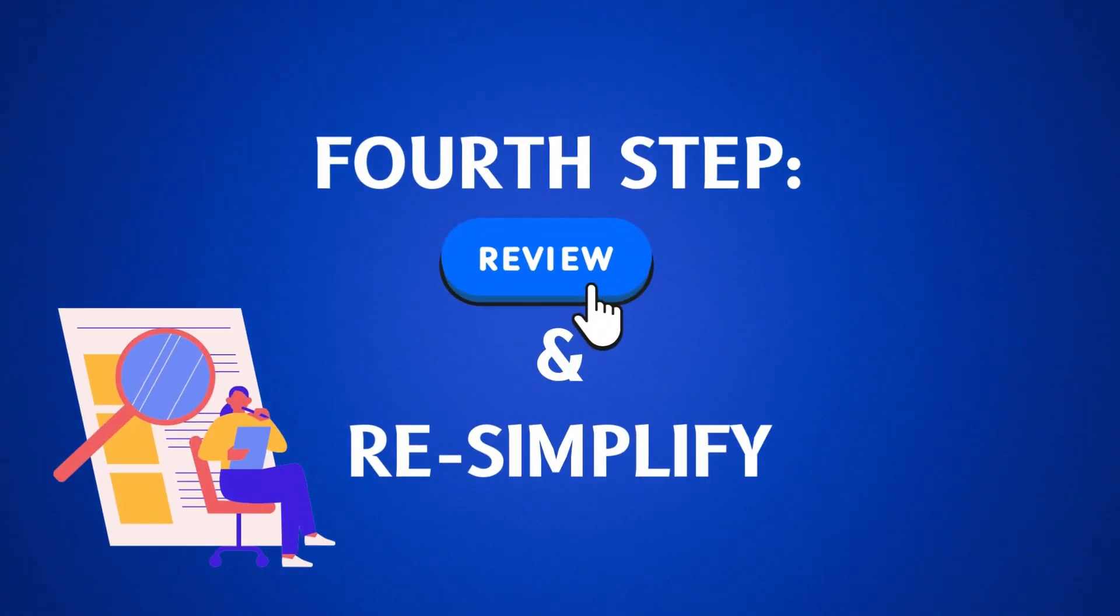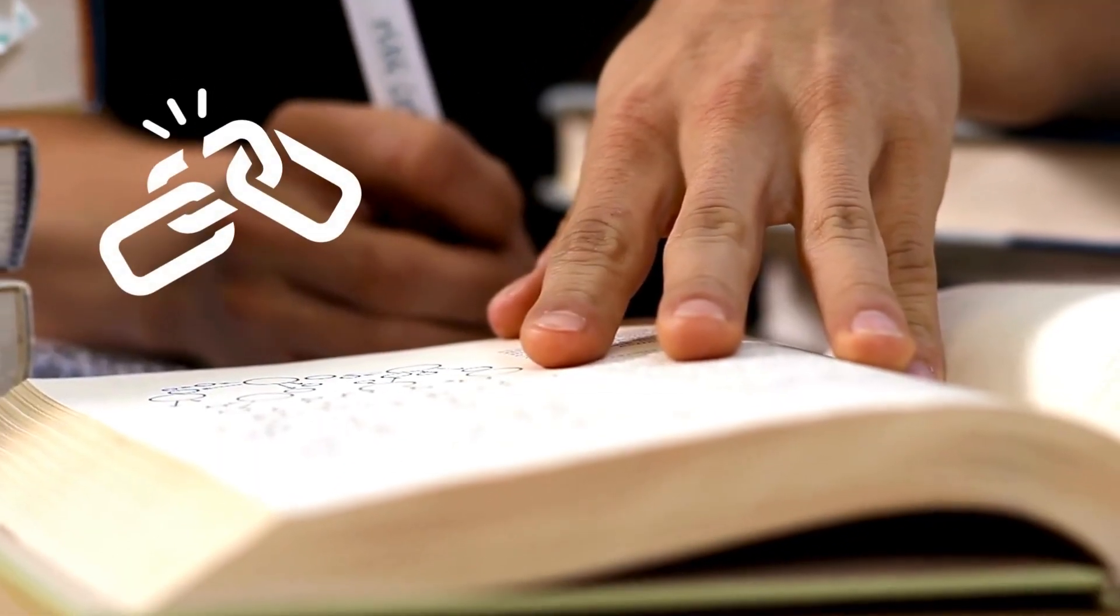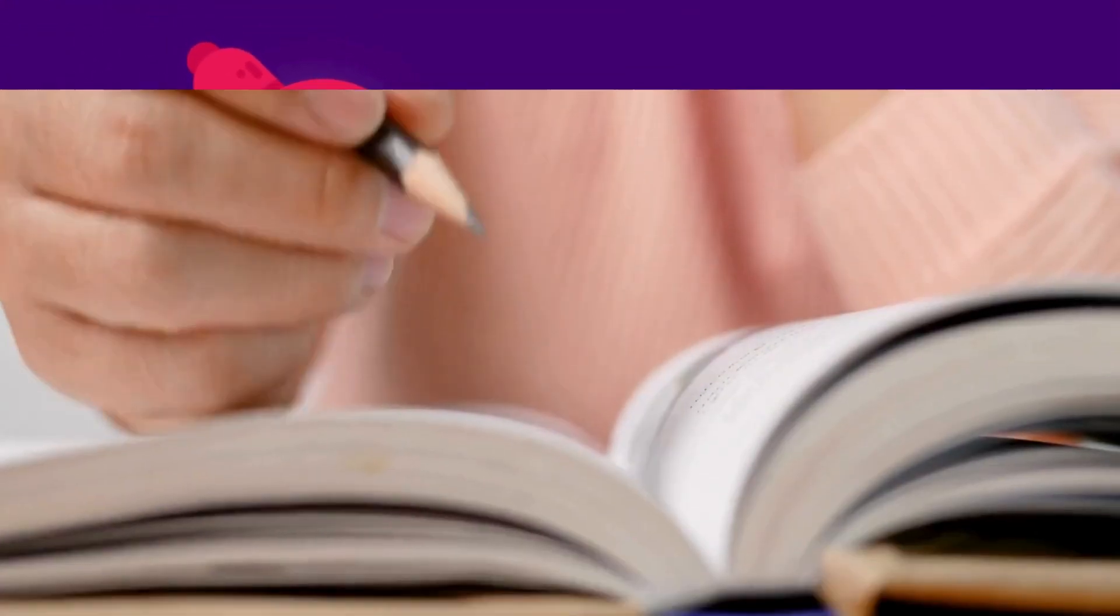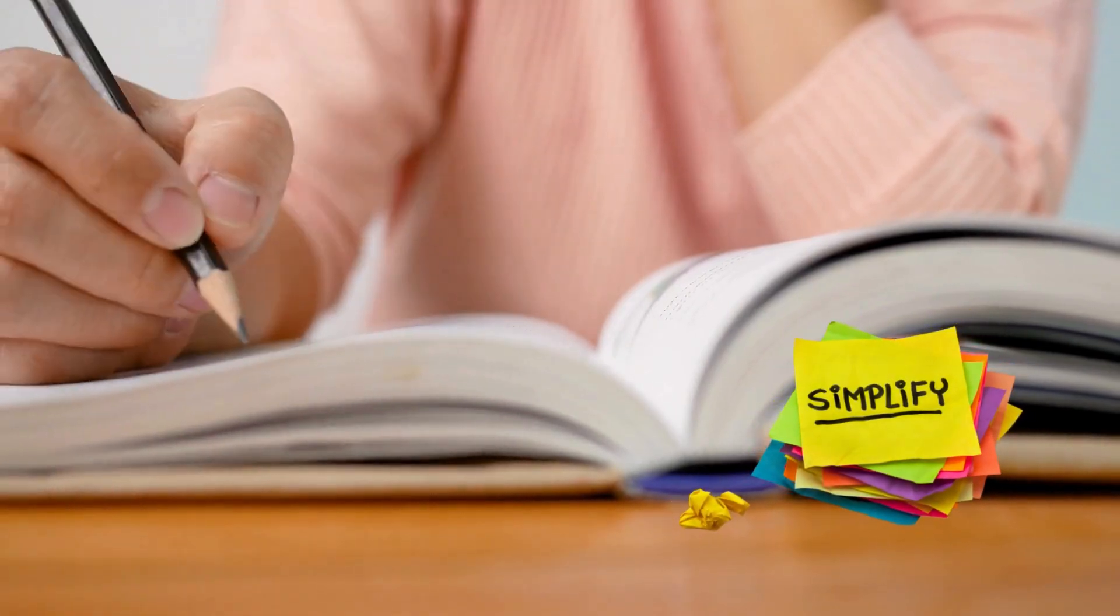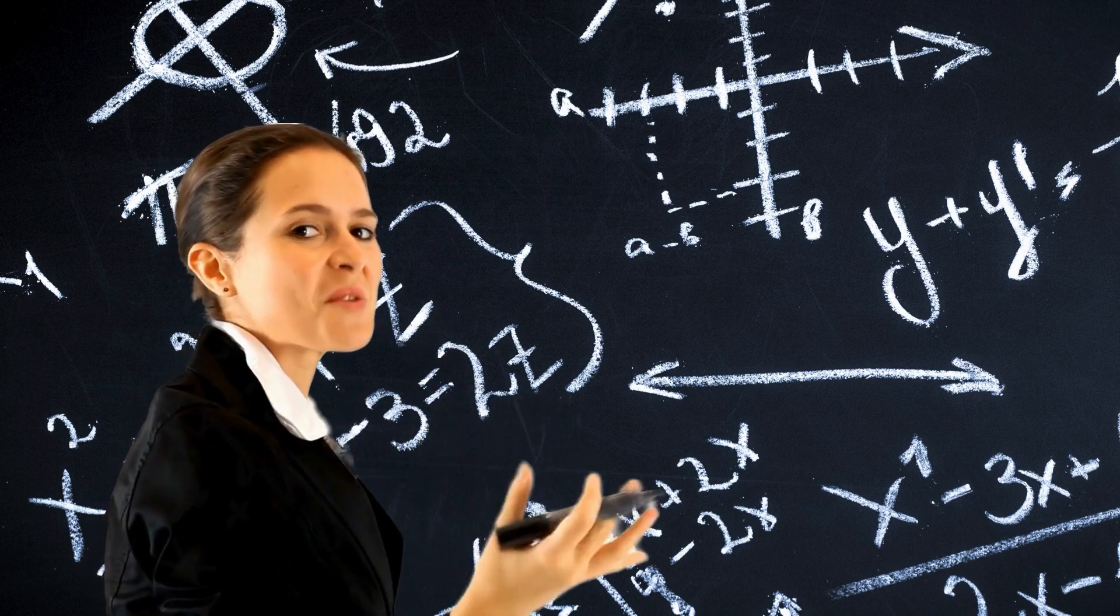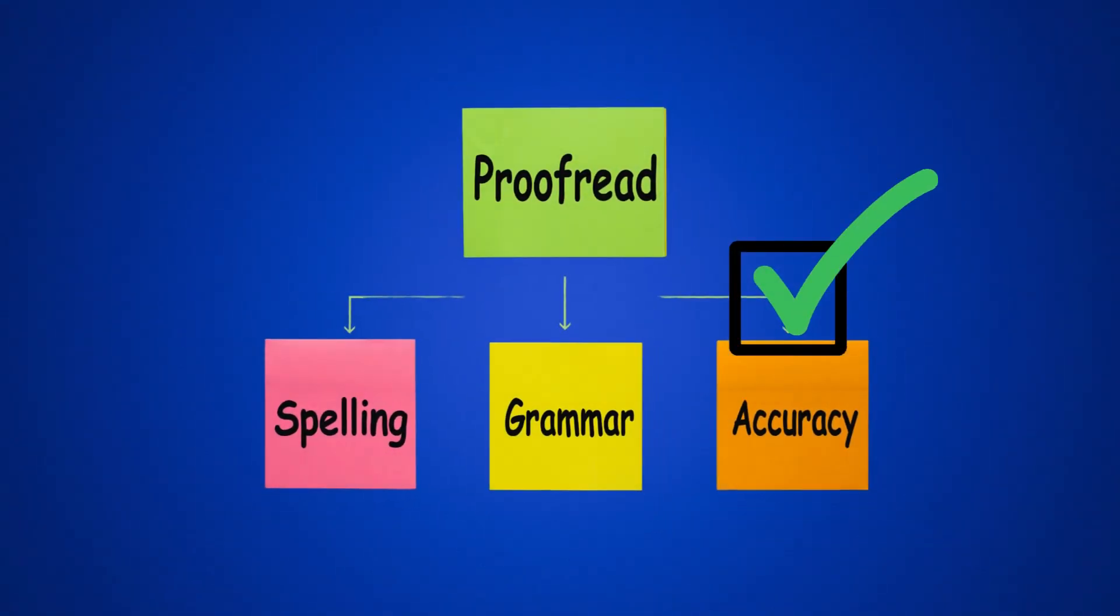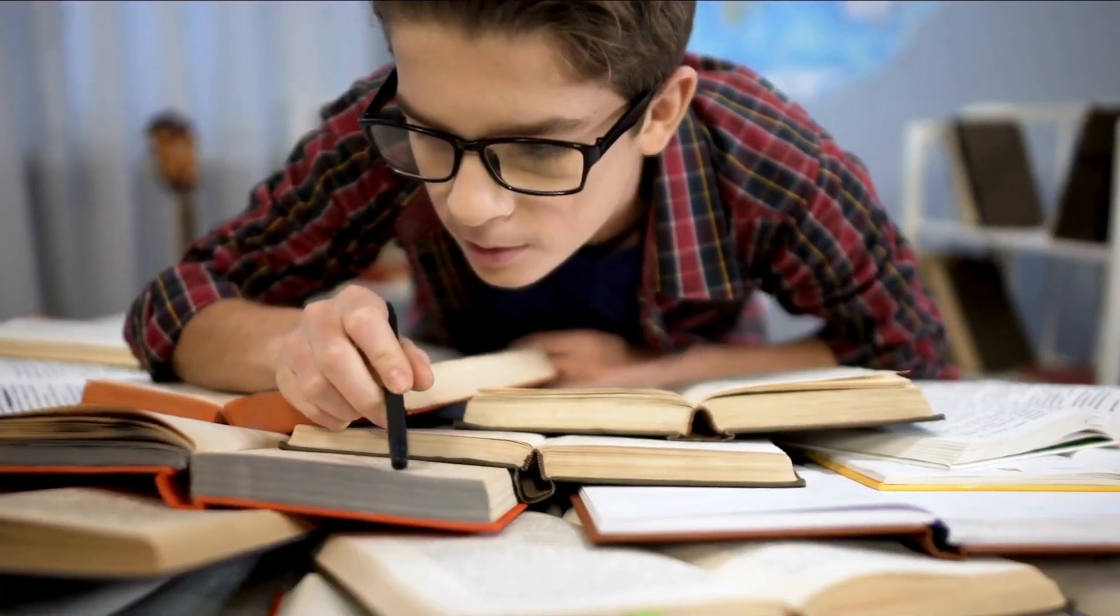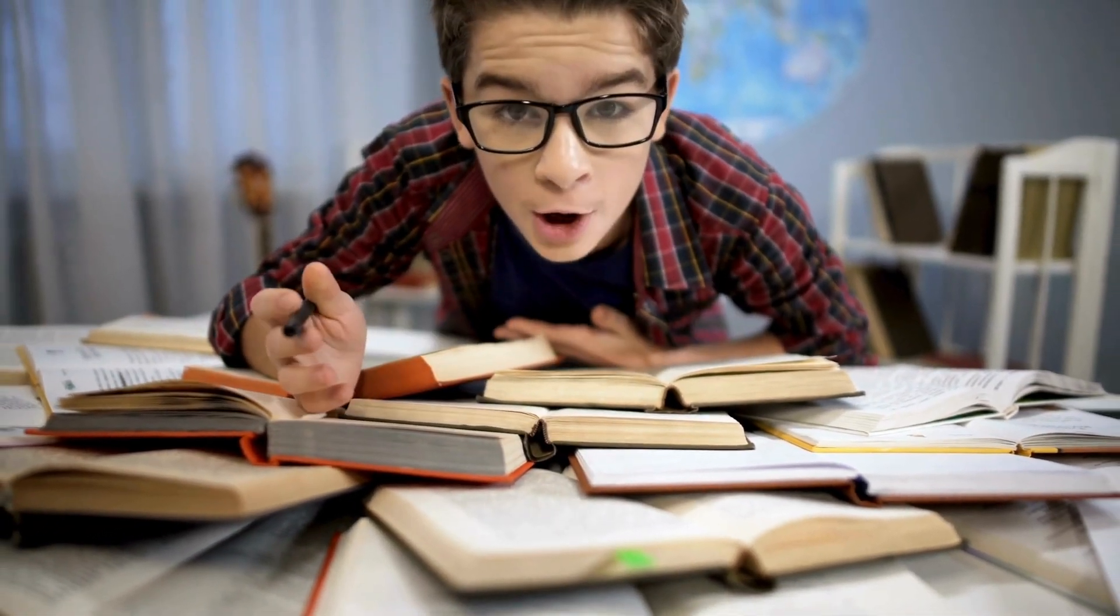The fourth step is to review and re-simplify. Once you've covered your weak points, review the topic again. Then try to make your explanation more simple. The goal is to express the concept in the simplest terms possible without losing accuracy. This step not only reinforces your understanding, but also ensures that you've mastered the material.